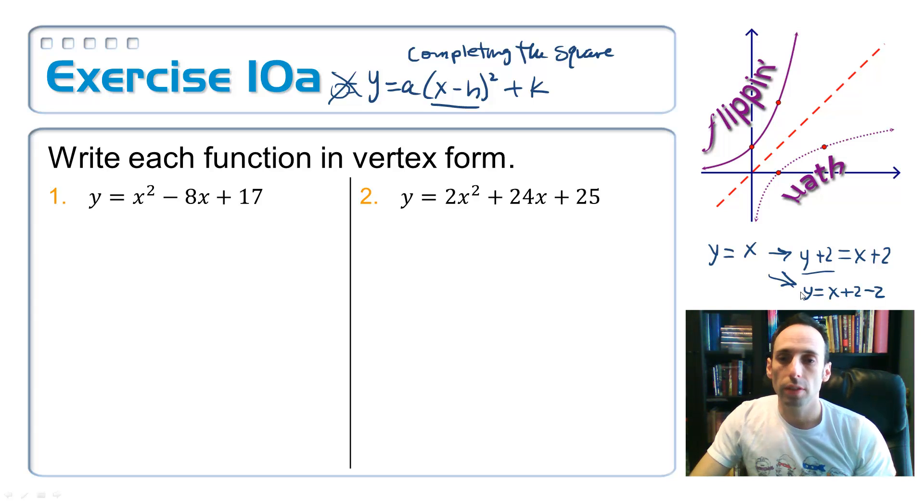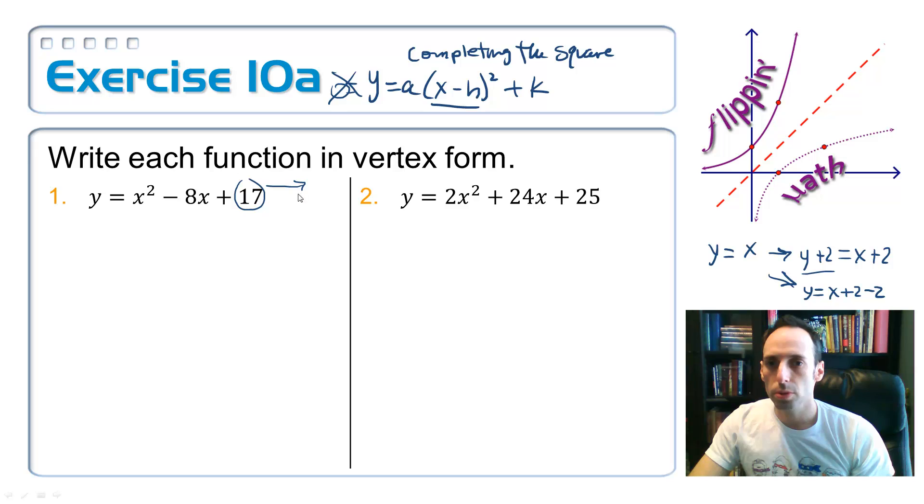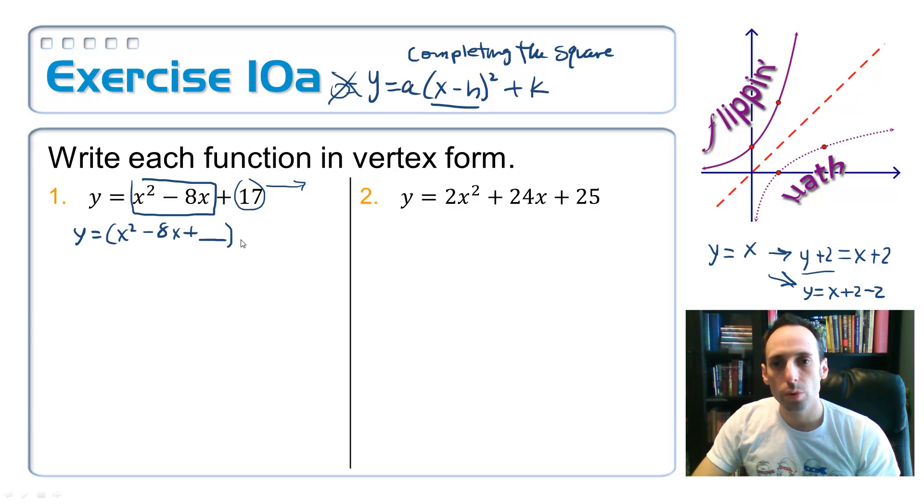That's the method that we're going to use. So let's try that on the first one. So first of all, this 17, let's push it off to the side, kind of ignore it for right now. Y equals in parentheses x squared minus 8x. We're only completing the square on these two. Plus a blank. Whatever I added to that side of the equation, I'm going to go ahead and subtract it from that same side of the equation, and then bring down my plus 17.